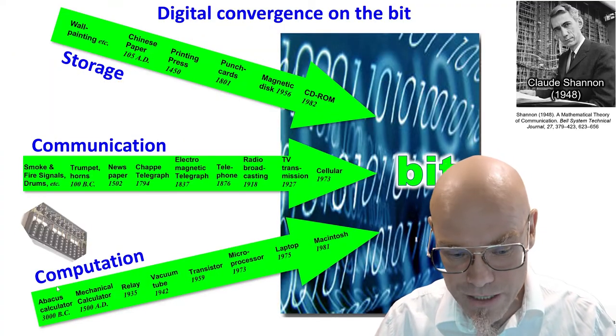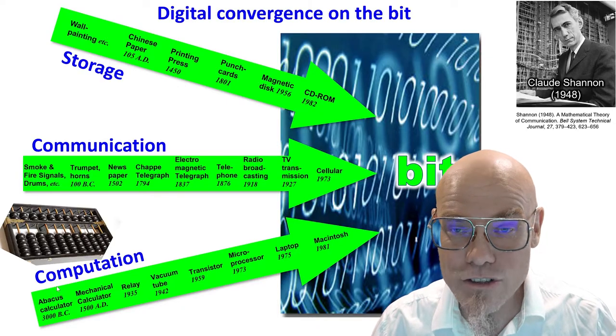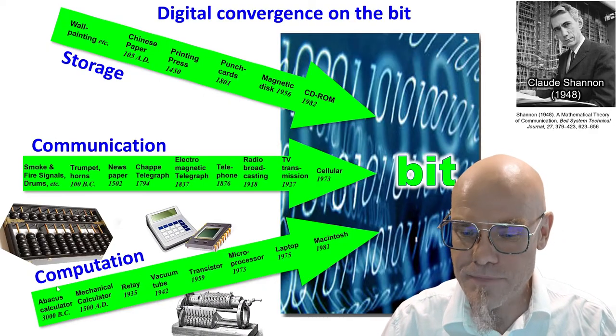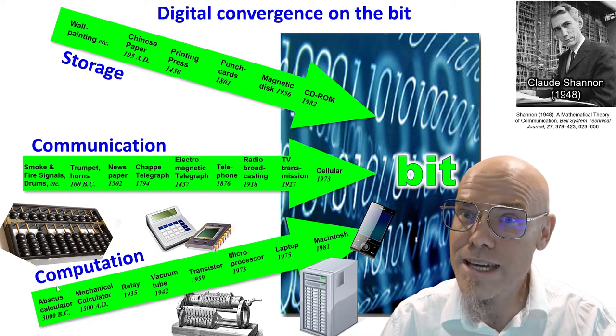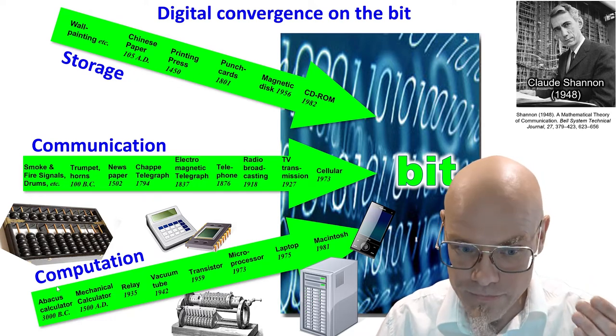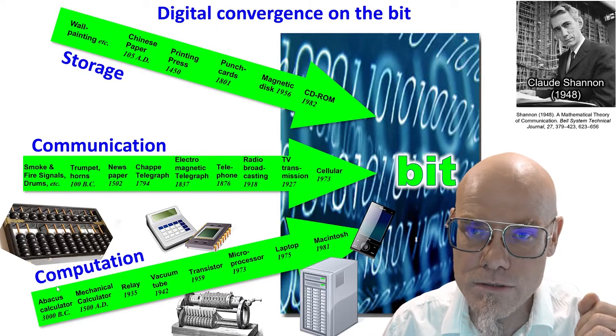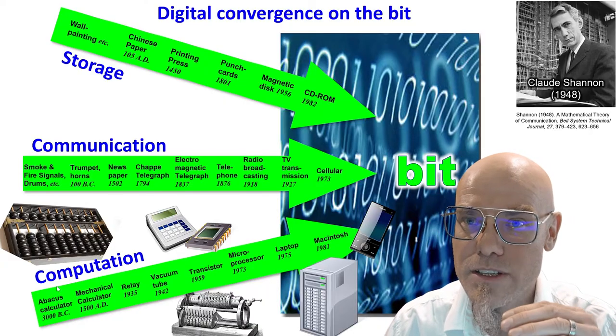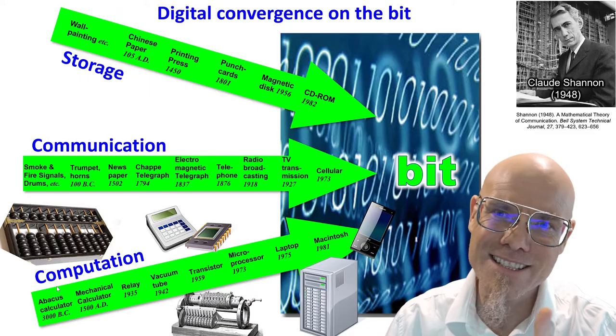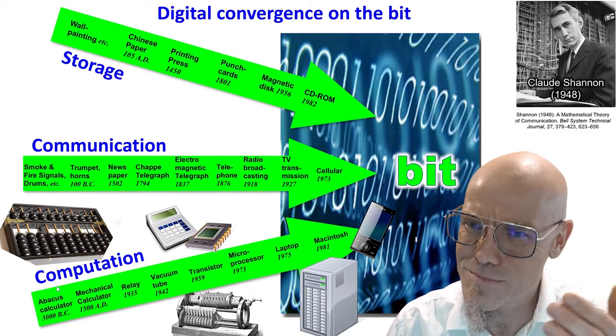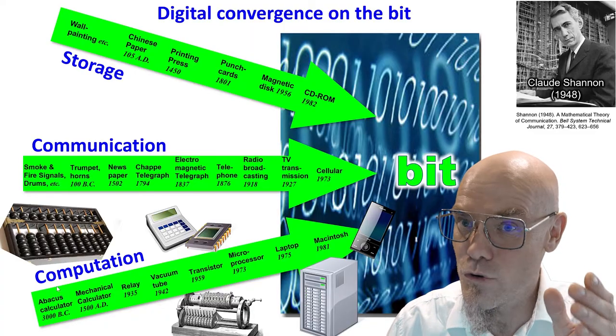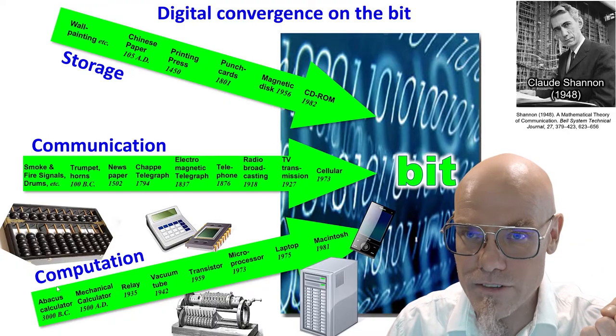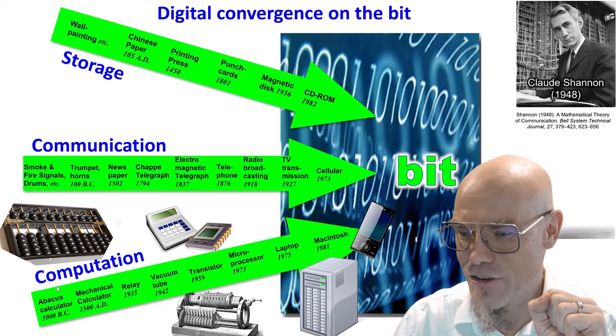And computation too, the abacus, that's more than 5,000 years old, that computer basically. And then all kinds of different calculating devices also converged on the bit. So computation, communication, storage. Communication is the transmission of data of information through space. Storage is the transmission of information through time. And computation is the transformation of information in space and time, the Turing machine.